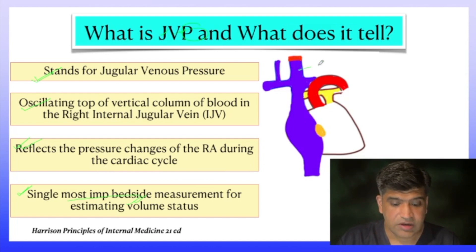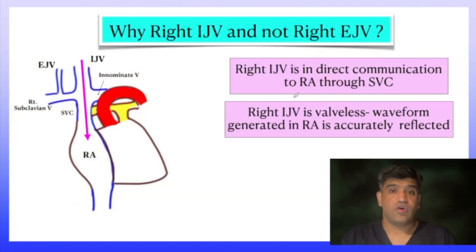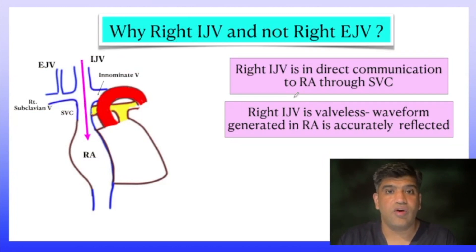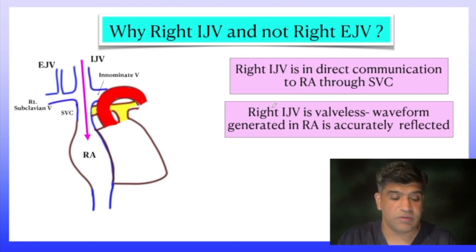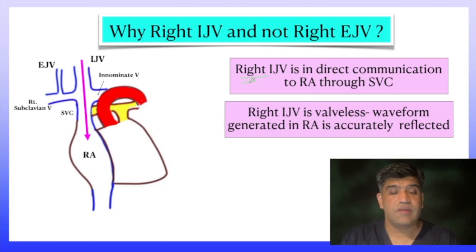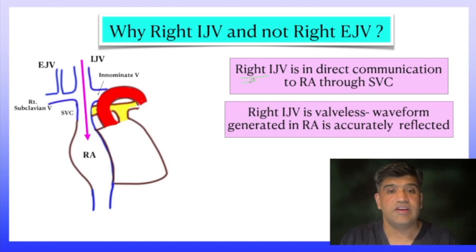This is the right internal jugular vein, and this is the oscillating column that we see in the neck. Why is it always the right internal jugular vein — why not the right external jugular vein or the left internal jugular vein? There are two reasons. The right internal jugular vein is in direct communication with the right atrium, so whatever happens in the right atrium is directly reflected into the right IJV.